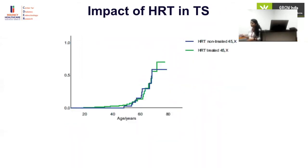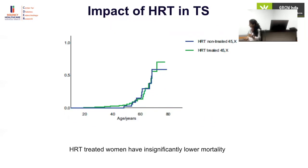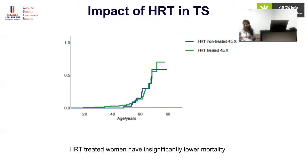Mortality was almost the same in both HRT-treated and non-treated women — a statistically non-significant difference. This is not unexpected, as the deaths are caused by cardiovascular and endocrine issues rather than conditions directly altered by HRT. Maintaining blood pressure, ideal weight, and controlling diabetes would be more important interventions than HRT for reducing mortality.